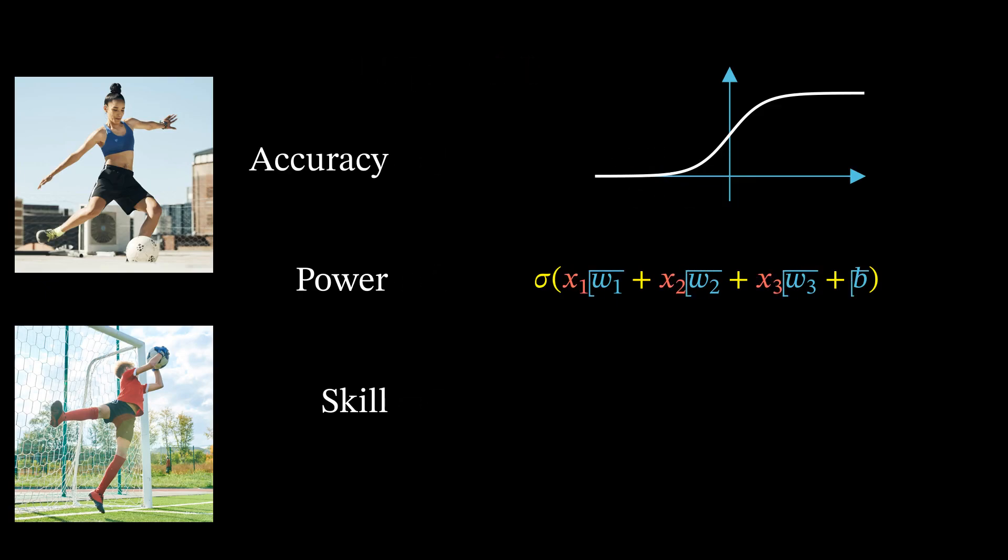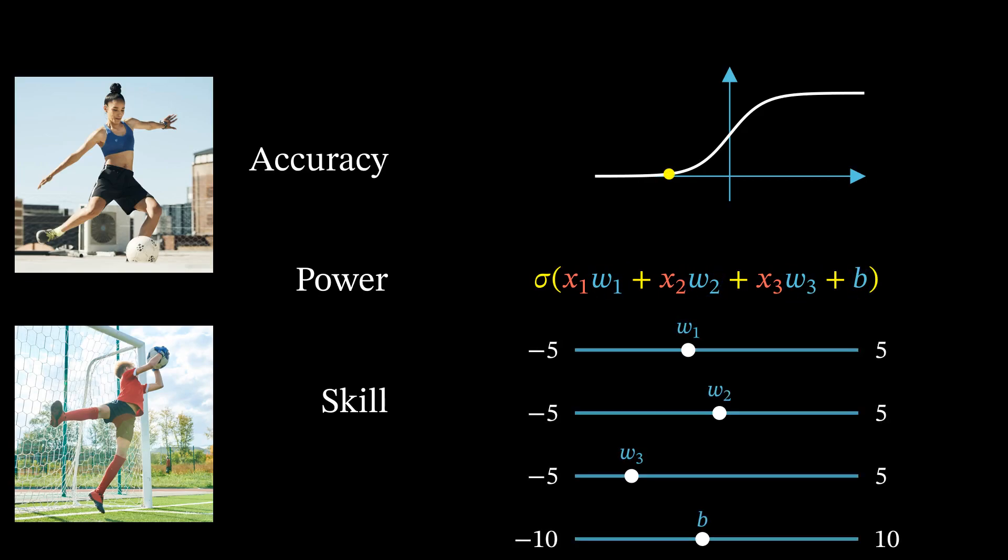Collectively, weights and biases are called parameters of a neural network. They control the output of the neuron. If we know their correct values, then we can start making predictions. All we need to do is plug numbers into the inputs. But in practice, parameters are not given. Instead, they have to be learned from the data. The process of learning them is called training a neural network.